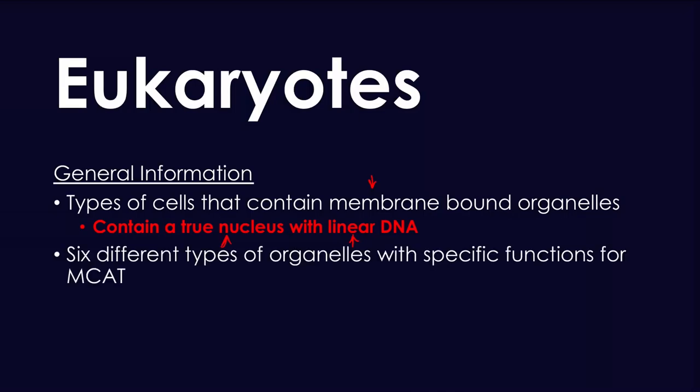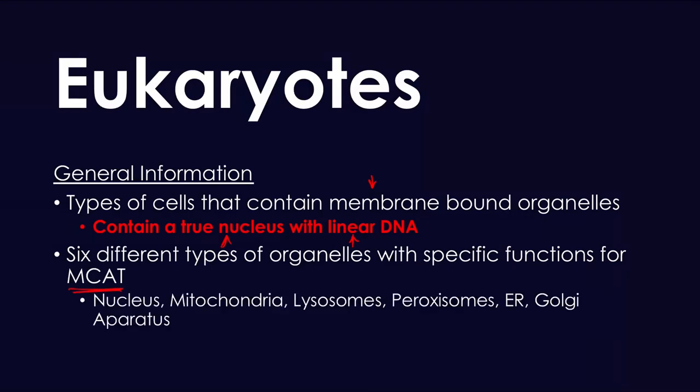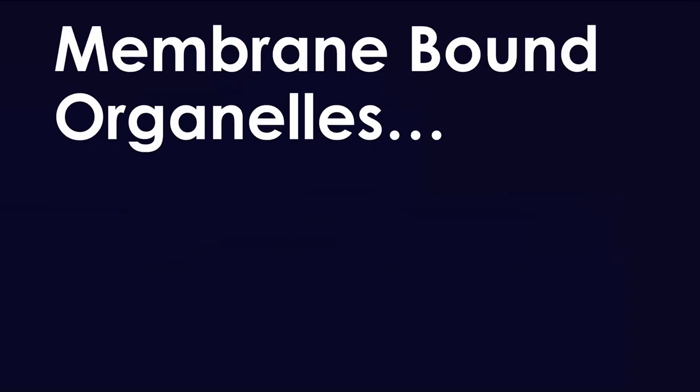There are six main types of organelles with specific functions you need to know for the MCAT: the nucleus, mitochondria, lysosomes, peroxisomes, endoplasmic reticulum, and the Golgi apparatus. All of these are very important. All of these organelles reside within the cytoplasm and are all bound by a membrane, hence why they are called membrane-bound organelles.